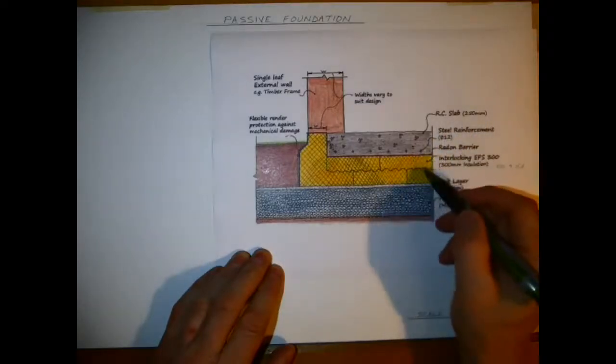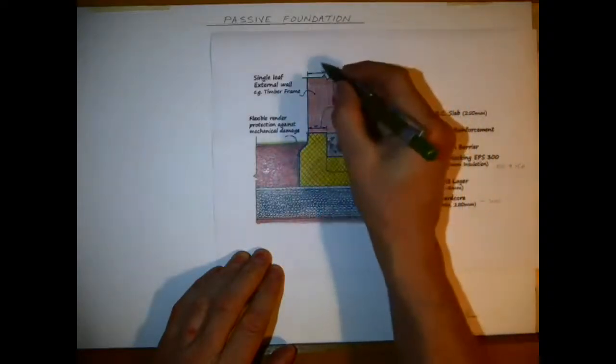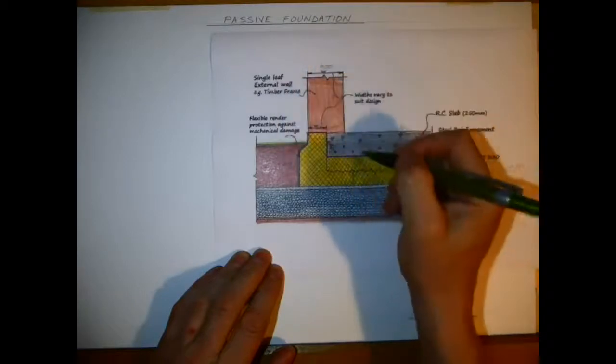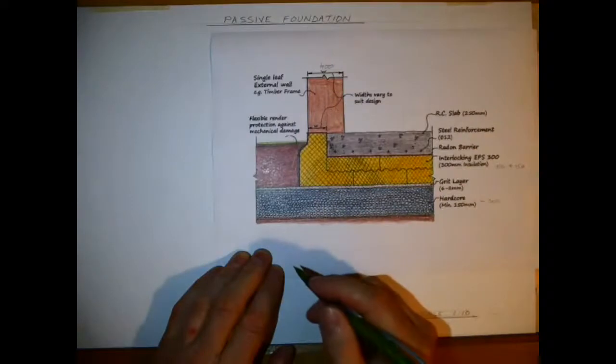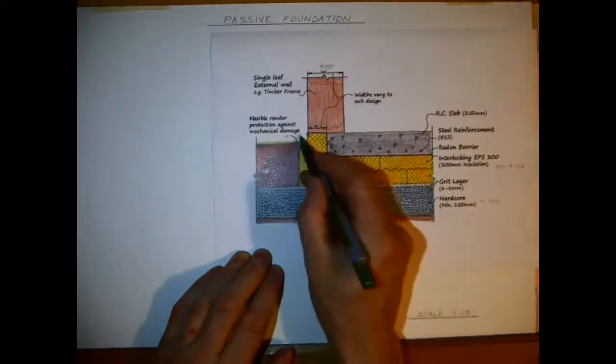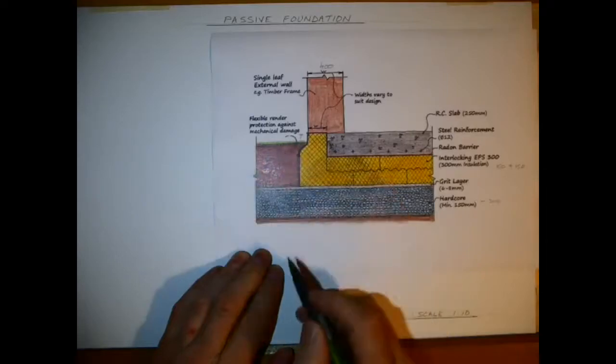You've got a radon barrier here, your steel reinforcement in a concrete slab of 250. You can see that there's a single leaf wall here without any detail in it and you can see that the insulation comes to halfway on the wall which is a 400 millimeter wall.